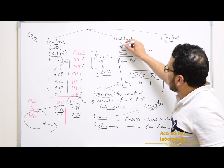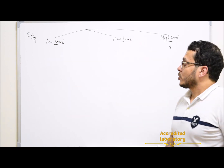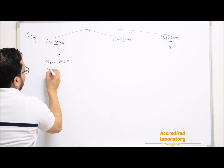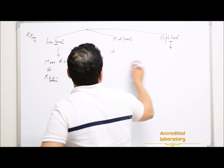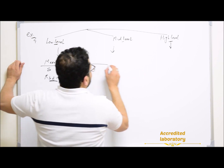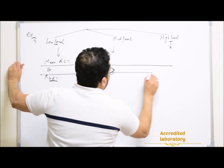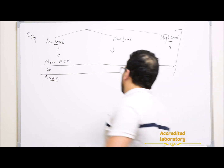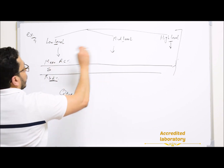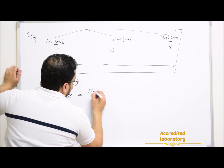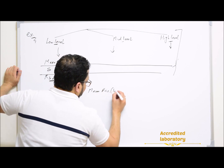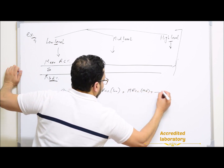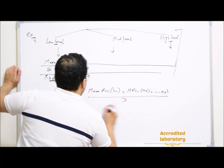We will repeat the same thing for mid-level and high-level. So from each level we get mean recovery, standard deviation, and relative standard deviation. Then we will calculate the average recovery of these three levels — Q-type — which equals the mean recovery of low-level, plus mean recovery of mid-level, plus mean recovery of high-level, divided by 3.